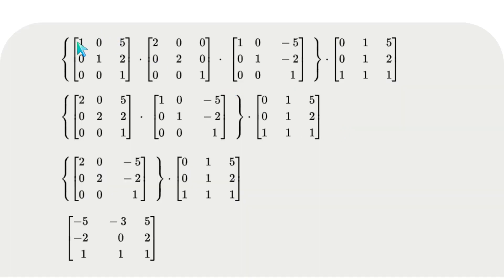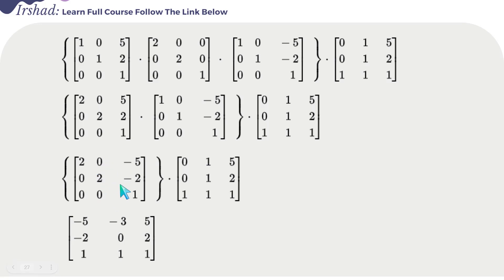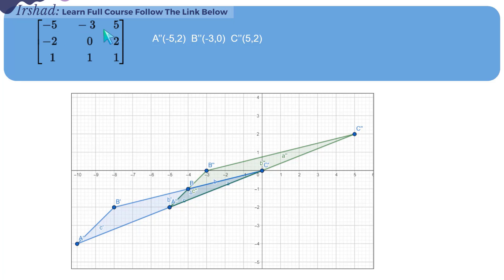We write the positive translation, then scaling, then negative translation matrices, followed by the coordinate values. First, the two rightmost matrices are multiplied, then their result is multiplied with the next matrix, and finally the composite matrix is multiplied with the coordinate vertices to get the final output.